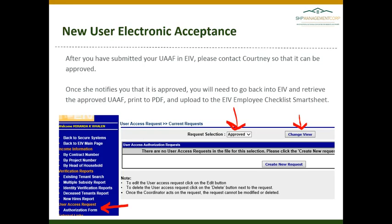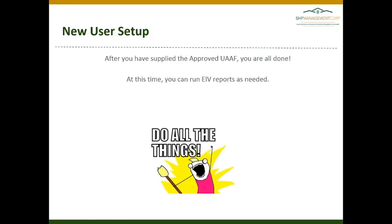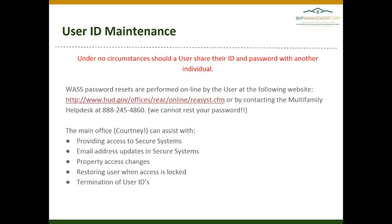After you have submitted your UAAF in EIV, please alert Courtney so that she can go in and approve it. When she notifies you that it is approved, you will need to go back into EIV, retrieve the approved UAAF, print to PDF, and upload to the EIV Employee Checklist Smartsheet. There are detailed instructions for all of these steps in the Step 4 document that Courtney will send to you. After you have supplied the approved UAAF, you are all done and can run EIV reports as needed. Please note that under no circumstances should a user share their ID and password with another individual. If someone requires access to reports for your property, please alert the corporate office so that we can get that user set up appropriately.